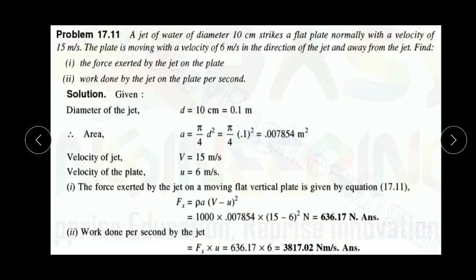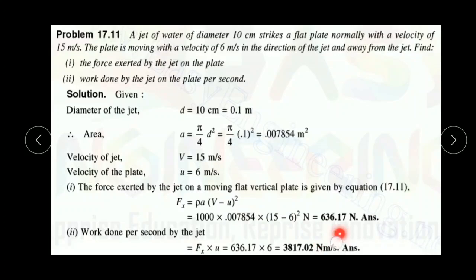If the question also asks for the power of the jet: we know that work done per second equals power. So power of the jet = 3817.02 W. Since newton·meter = joule, and joule per second = watt, power = 3817.02 W = 3.817 kW.